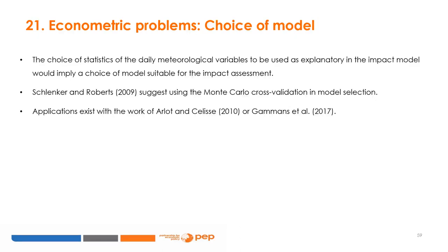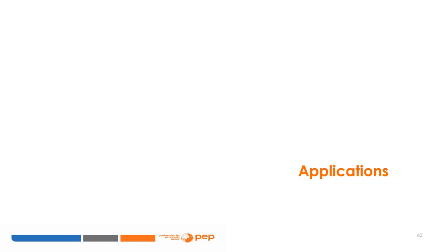Finally, another problem lies in the varied choice of models. The choice of summary statistics of daily meteorological variables to be used as explanatory data in the impact model implies a choice of models suitable for impact assessment. Schlenker and Roberts (2009) suggest using Monte Carlo cross-validation in model selection, with applications in the work of Arlo and Celis (2010) and Gammens et al. (2017). In the following section, we estimate a model of the impact of climate change, taking into account the econometric problems mentioned above.